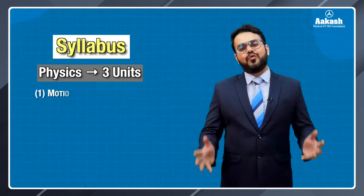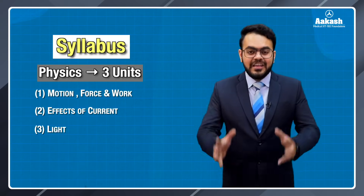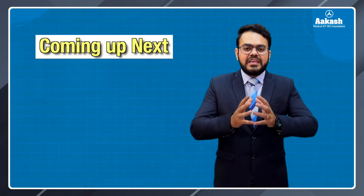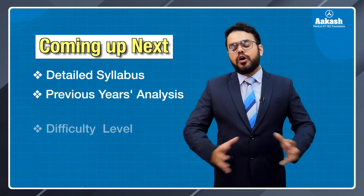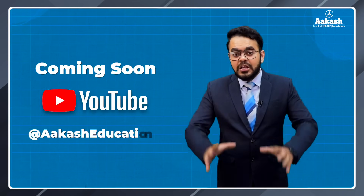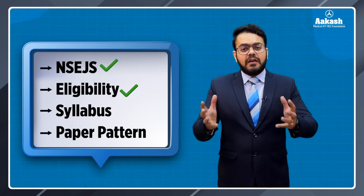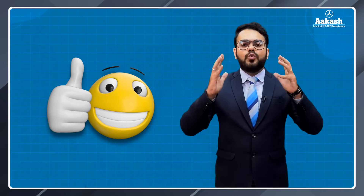For physics, we have three units: Motion, Force and Work; Effects of Current; and Light. I've told you about the syllabus of NSEJS in brief, but if you want a detailed version along with the analysis of previous year papers and difficulty level, check out the next video that will be soon uploaded on the channel. In this video, we covered eligibility, syllabus, and paper pattern. Best of luck to all of you who want to achieve something in science and gain international recognition. Best of luck, bye-bye.